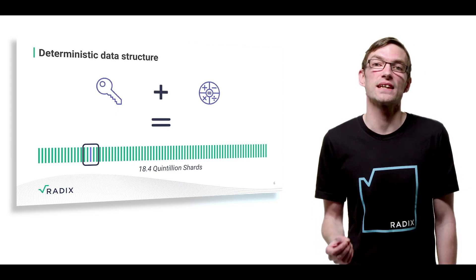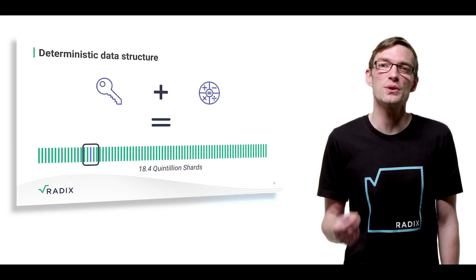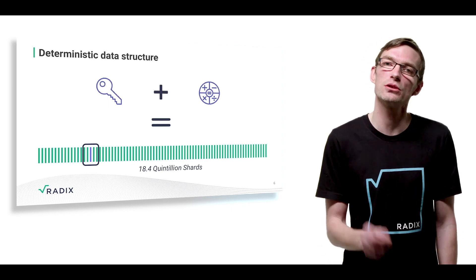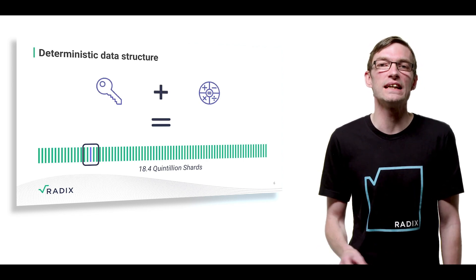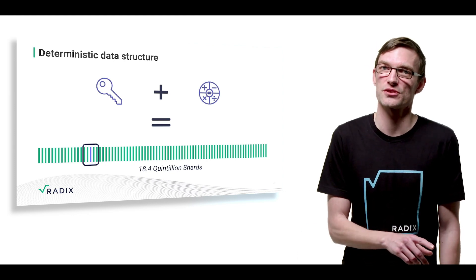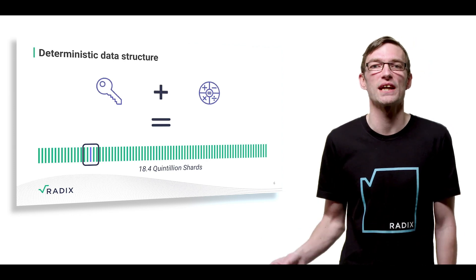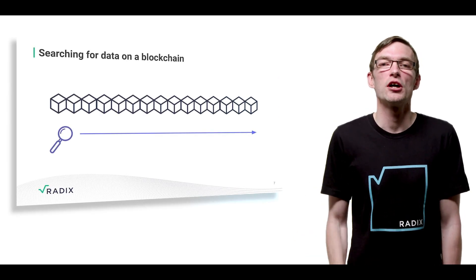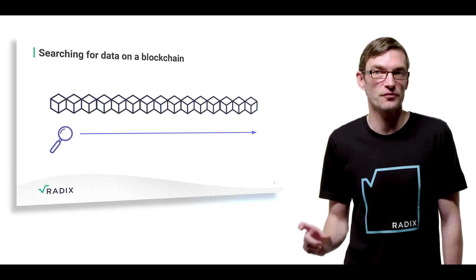This deterministic indexing into the data structure provides two incredibly powerful things: first, it makes it easy to find the data you are looking for; and second, it groups together related transactions and ungroups unrelated ones. This becomes clearer if we compare how you search for specific data on a blockchain compared to how you search for it on Radix. On a blockchain, all transactions are bundled together into blocks, and blocks are arranged sequentially to form a chain.